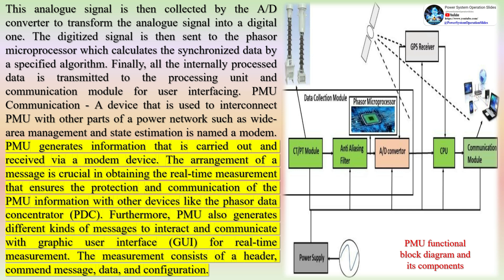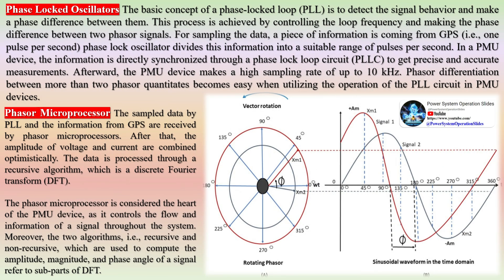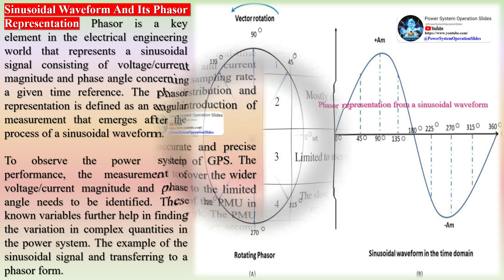The internal structure of the PMU device consists of many important electrical and electronic components that are critical for the accuracy and delivery of PMU information. These components consist of GPS, modem, AD converter, anti-aliasing filters, phasor microprocessor, and phase-lock loop oscillator. The analog signal is collected by the A-D converter to transform it into a digital signal. The digitized signal is then sent to the phasor microprocessor, which calculates the synchronized data by a specified algorithm. Finally, all the internally processed data is transmitted to the processing unit and communication module for user interfacing.